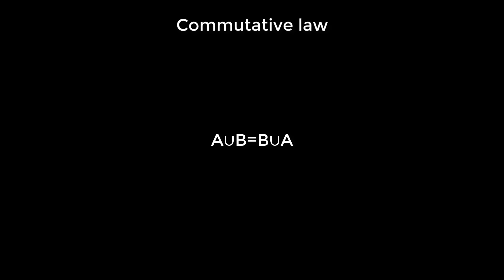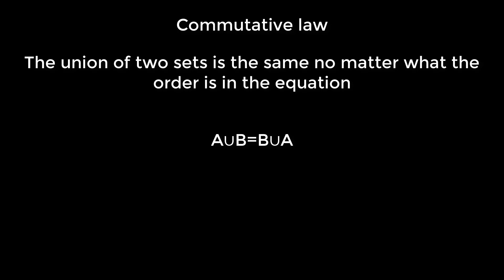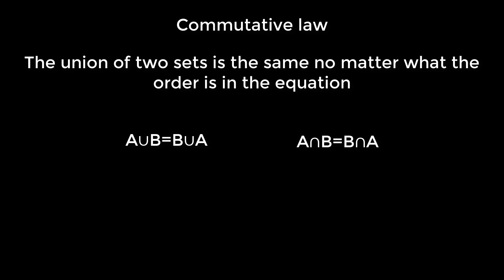The first property is A union B equals B union A. This is known as the commutative law. This law states that the union of two sets is the same no matter what the order is in the equation. It is also true for intersection: A intersection B equals B intersection A. That means the intersection of two sets remains the same even after altering their position in the equation.